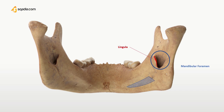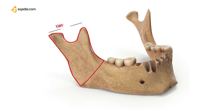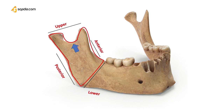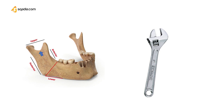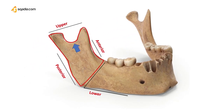Here we have the angle of the mandible formed between the ramus and the body. Coming to the borders: there is the upper border, the lower border, and the anterior and posterior borders. The upper border of the ramus is thin and curved downwards, forming the mandibular notch — similar to a taric wrench shape. The lower border of the ramus forms the angle of the jaw, which is thinner anteriorly and thicker posteriorly.